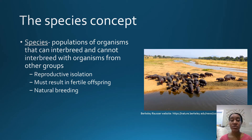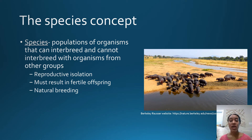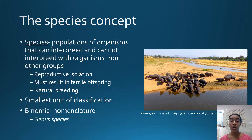All life on Earth is categorized into specific groups. The species concept is defined by populations of organisms that can interbreed with one another but cannot interbreed with organisms from other groups. This is a form of reproductive isolation and it must result in fertile offspring, and the breeding must occur naturally, not something that's human driven. A species is the smallest unit of classification of life. When naming a species, we always give them a genus and species name — the genus name is always capitalized, the species name always lowercase, and both are in italics.